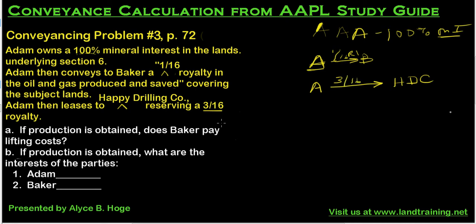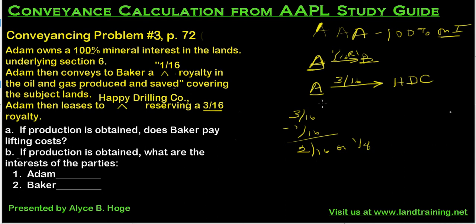Just as in the prior problems, when we talk about what A's interest is, we're going to have to deduct from this 3/16th whatever they conveyed to B. So the actual net revenue interest received by A — what's going to show up on that division order pay sheet — is going to be 3/16th minus 1/16th, which gives us 2/16th or 1/8th. So A is going to be left with 1/8th, and B is going to have the other 1/16th, which equals a royalty payment out of that 3/16th.